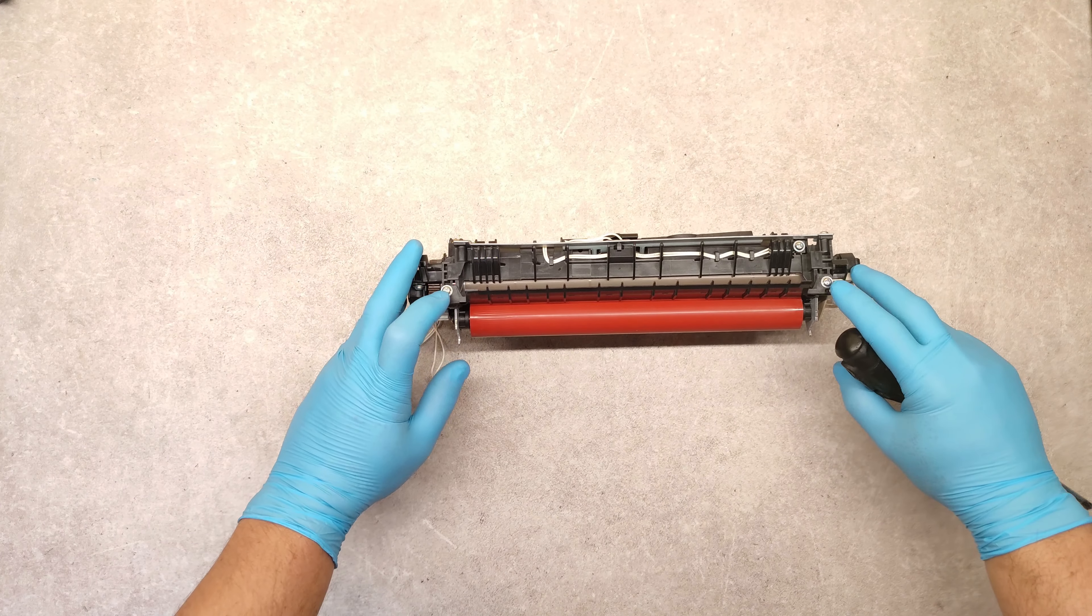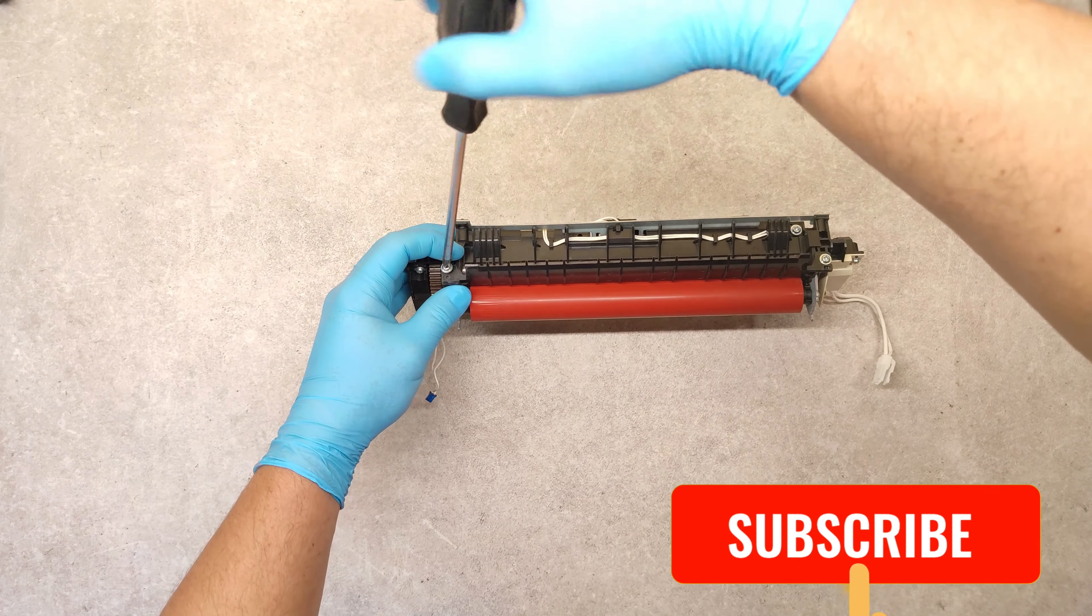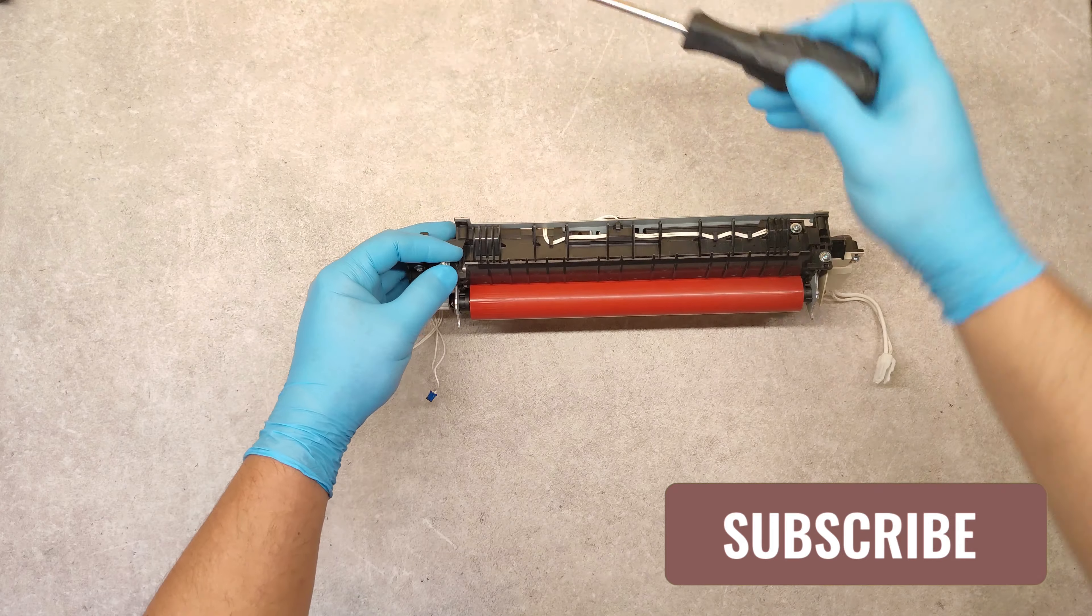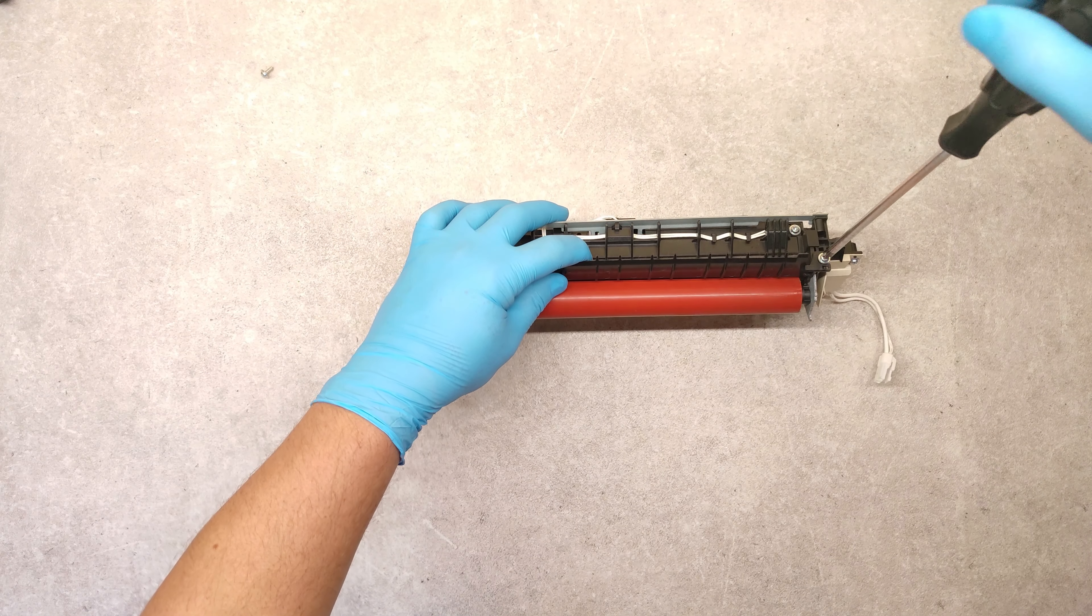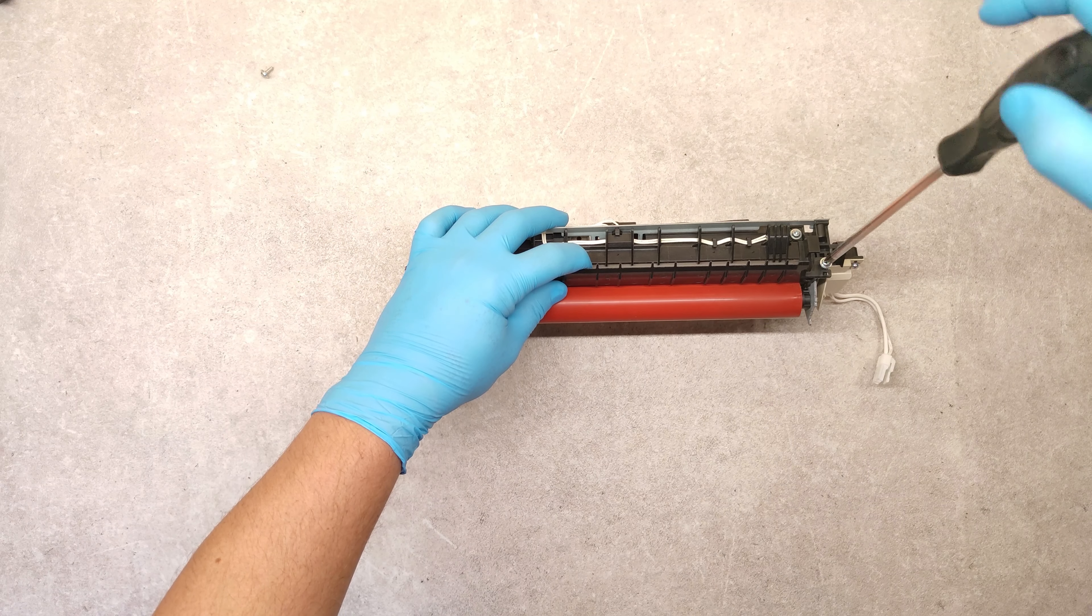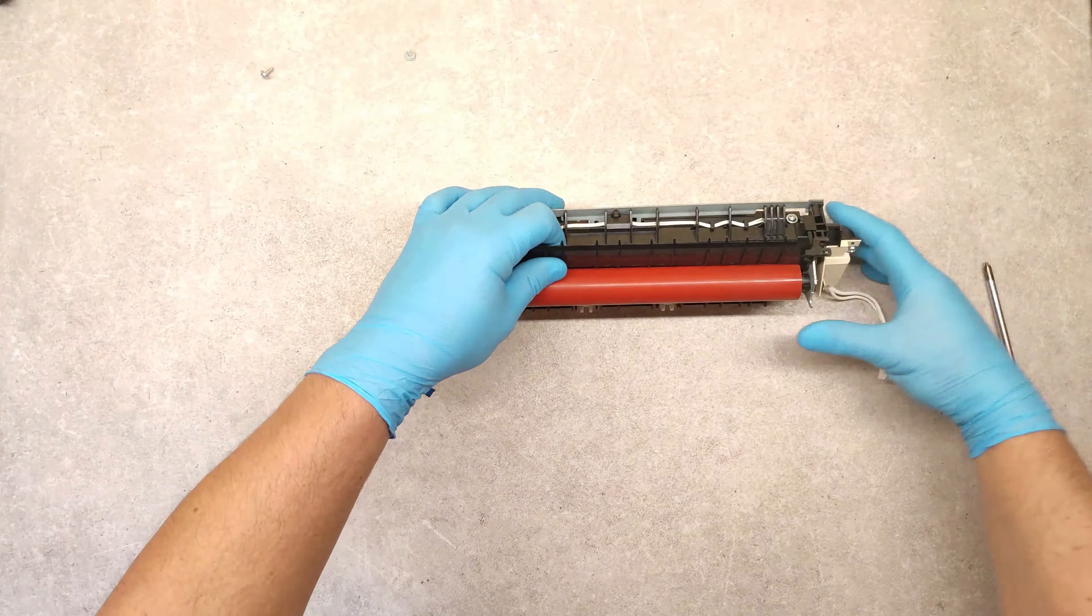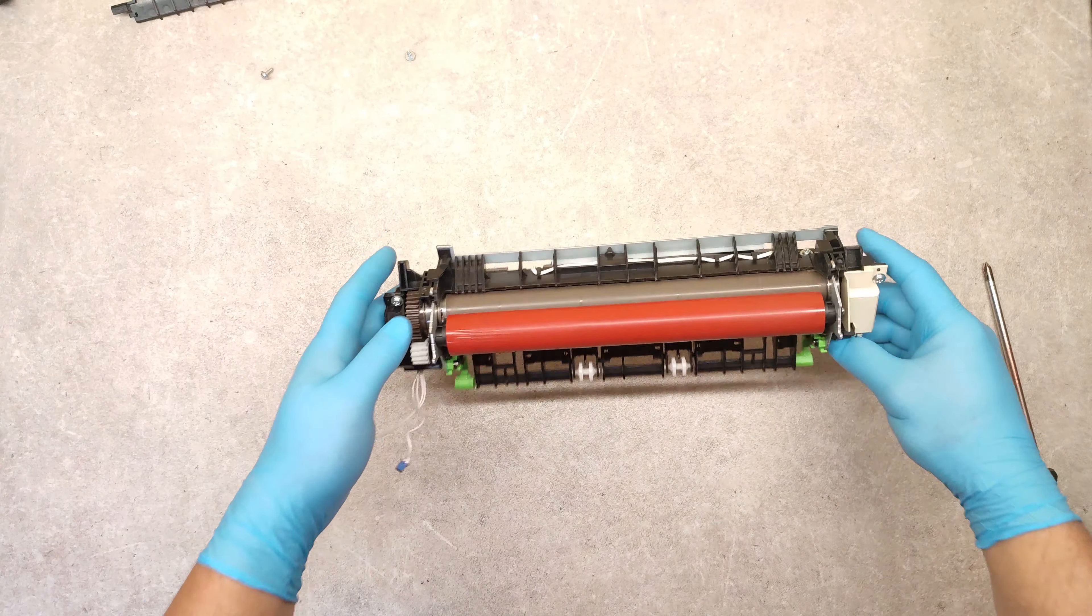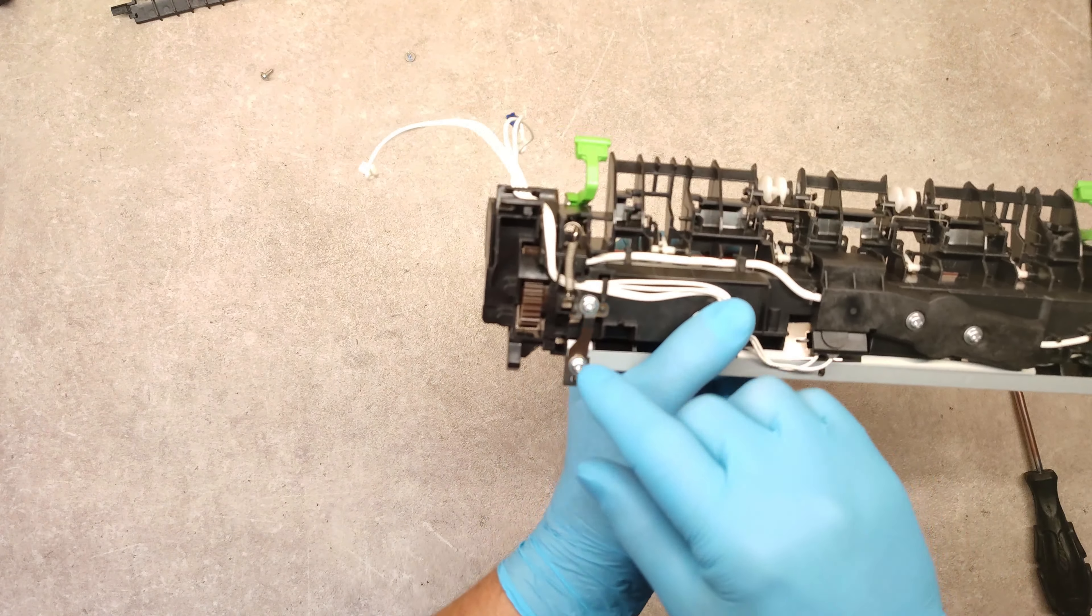First we have to remove these screws. After that, rotate the fuser unit.